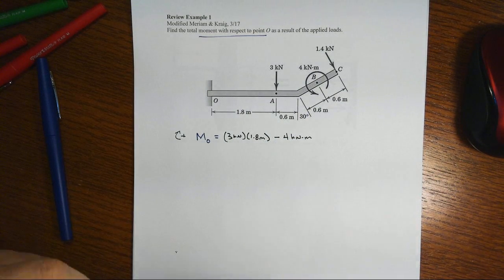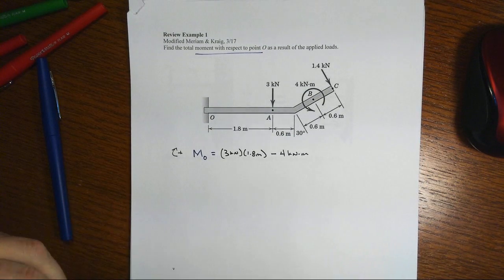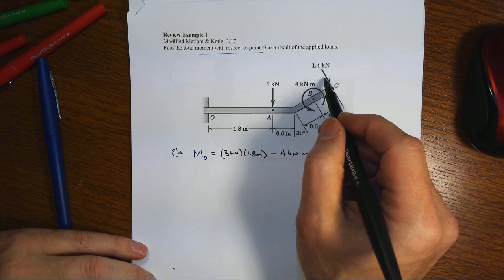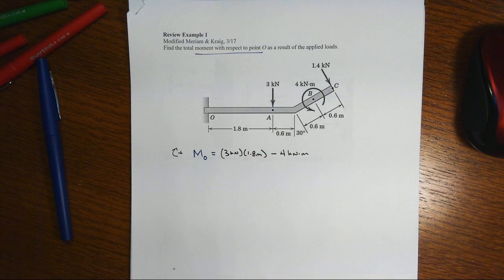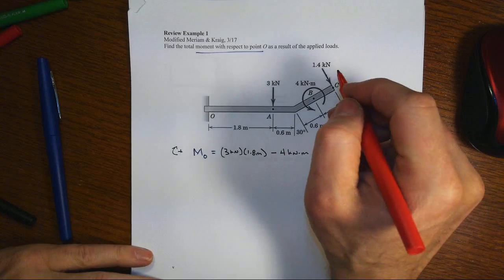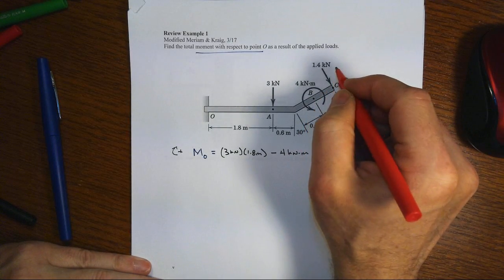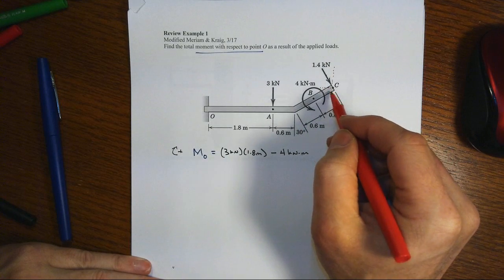And then we've got to deal with this force that's out here at the far right. We could work real hard to figure out the perpendicular distance of this force with respect to O, or we could break the 1.4 kilonewton into an X and a Y component and then deal with these moment arms that are there.